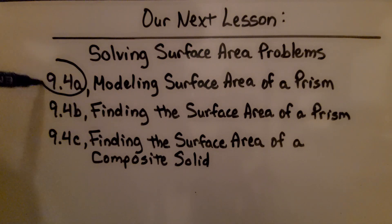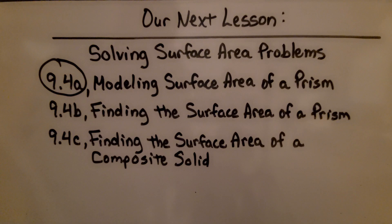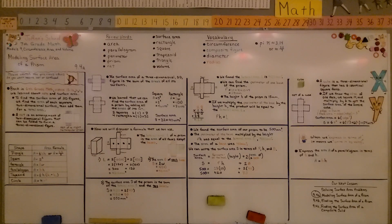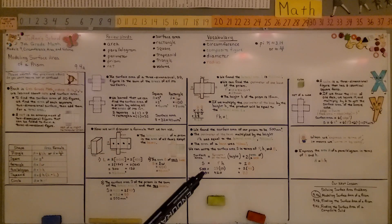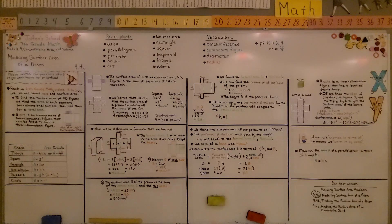We're finished with 9.4a and we're going to move on to 9.4b, finding the surface area of a prism, where we'll actually use the formula S equals PH plus 2B — the surface area equals the perimeter of the base times the height, plus 2 times the area of a base. You can write down the formula for the lateral area of a right rectangular prism as well, since you could use that in the future. Have a really great day, and join me for the next part of the lesson. Bye.